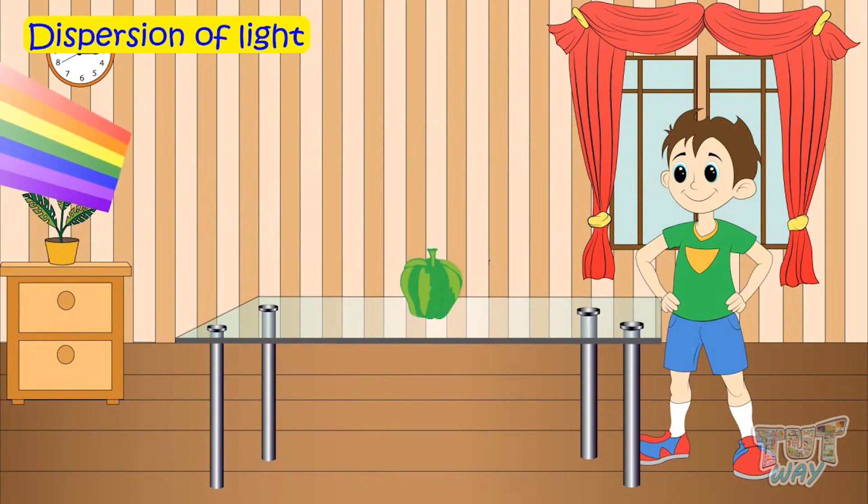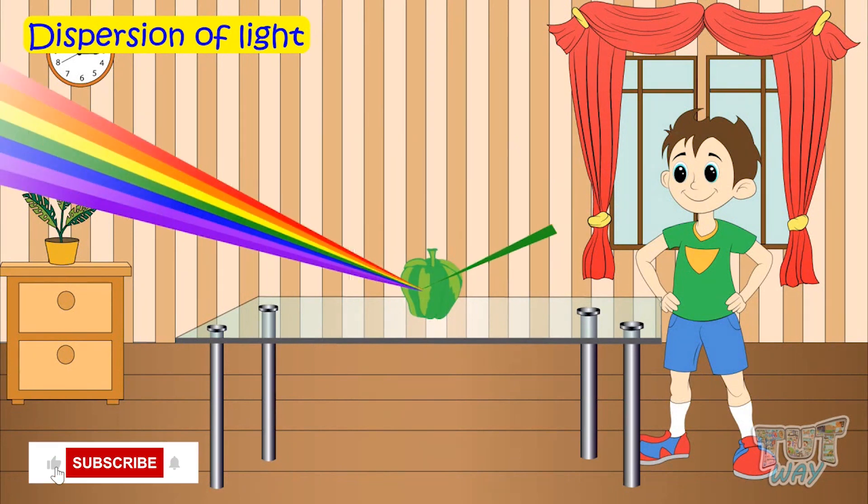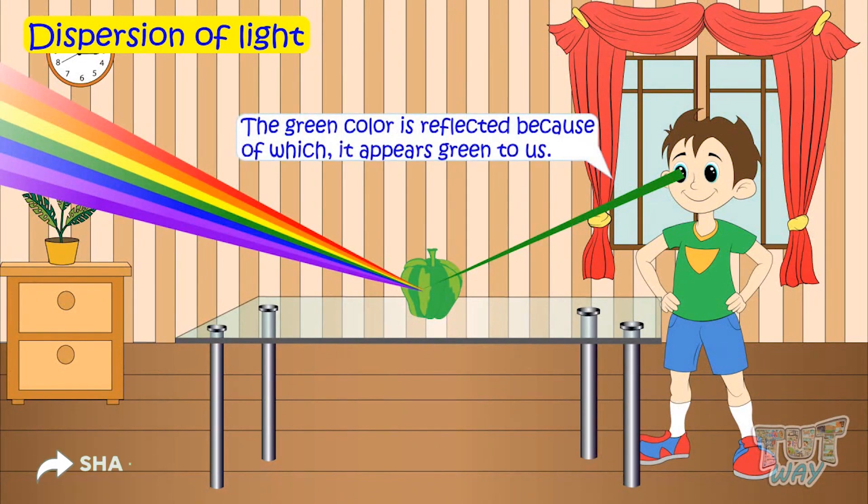If an object is green, it will absorb all the other colors except for green, and green color is reflected, because of which it appears green to us.